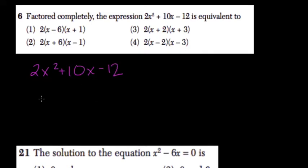Since 2x, 10x, and 12 all have two in common, factor it out. It's a good first step. So you have x squared plus 5x minus 6.